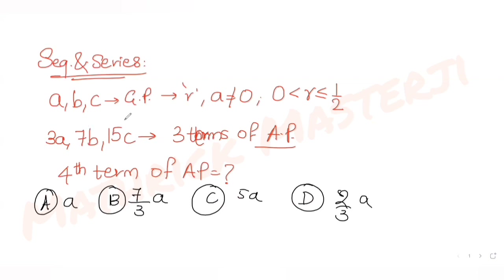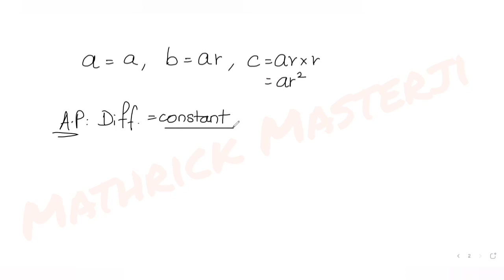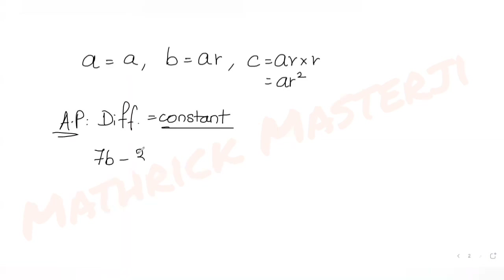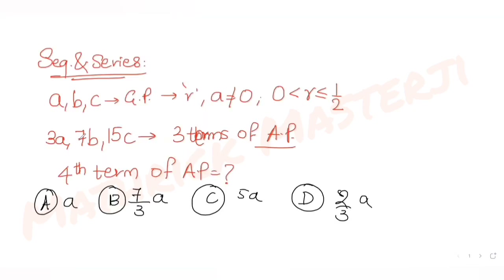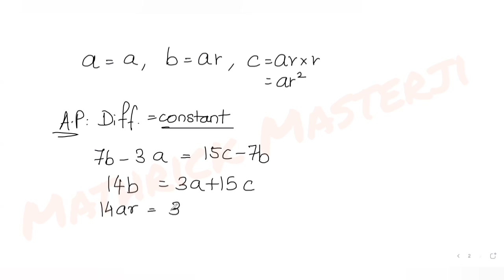Now, 3a, 7b, and 15c are the first three terms of an arithmetic progression. In an AP, the difference between consecutive terms is constant, so the second term minus the first equals the third minus the second. This gives us 14b equals 3a plus 15c, and substituting b = ar and c = ar², we get 14ar equals 3a plus 15ar².